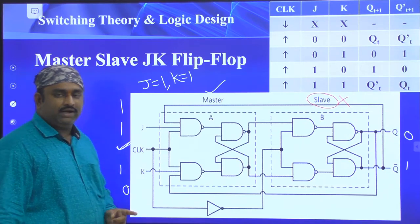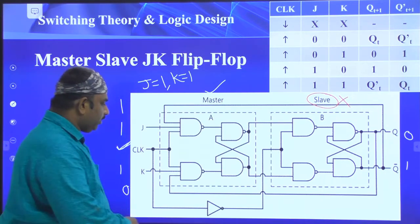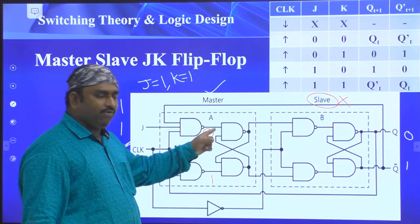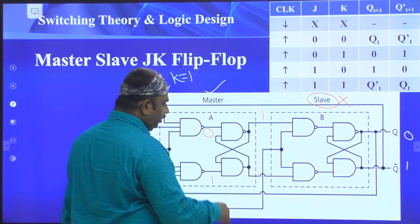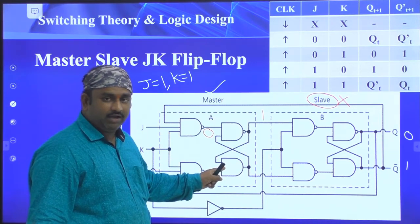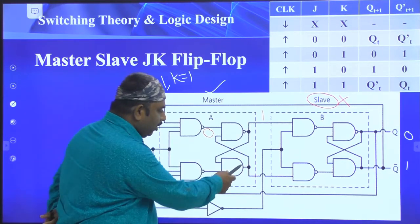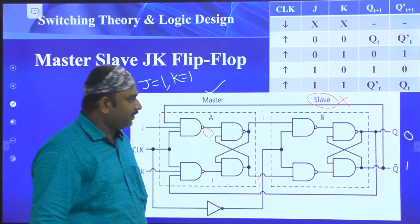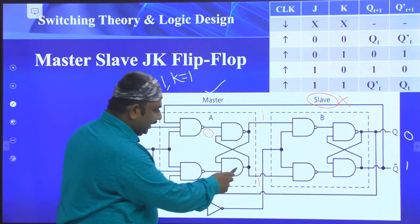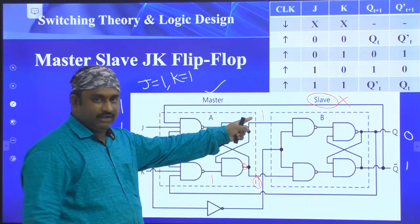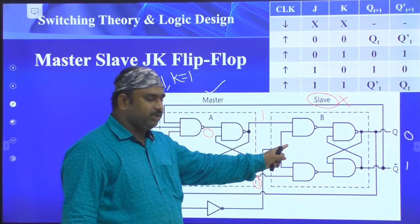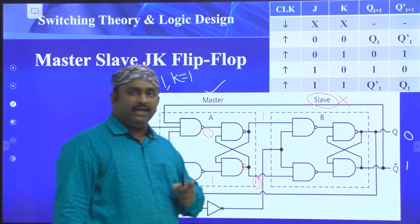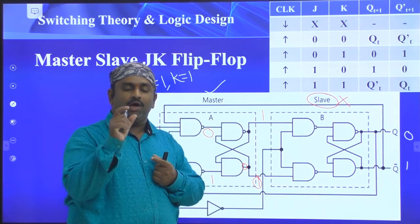We know that for a NAND gate, if any one input is zero the output is one. Analyzing the gates: one NAND gate has two ones and one zero — output is one; another has all ones — output is zero. So the inputs to the slave flip-flop become one and zero. The clock signal consists of logic zero and logic one, and our problem is that the output is continuously toggling at the output side. But since the second slave flip-flop is not in working condition, there is no output change.